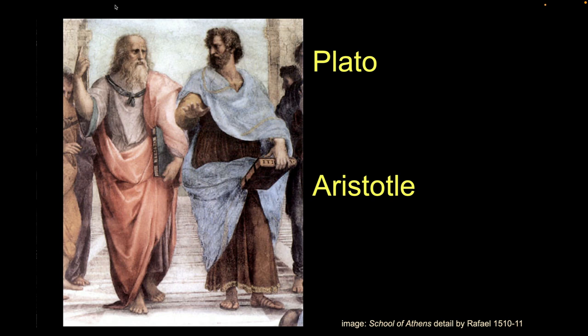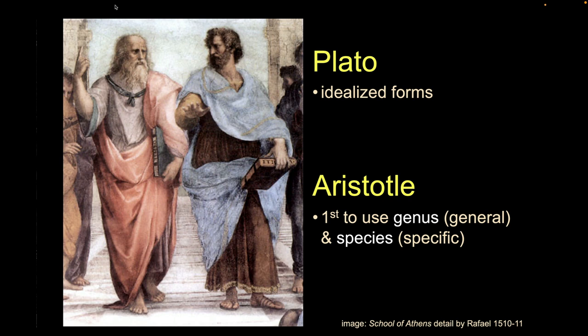Our Western ideas start with Plato, on the left, and Aristotle, his student on the right. Plato had this idea of idealized forms — an ideal version of a chair, an ideal version of a bluebird, and things are copies of that. That strongly influences Aristotle, who first uses the idea of a genus as a general category of life, and a more specific term for that particular type of life. That will be perfected later by Carl Linnaeus.